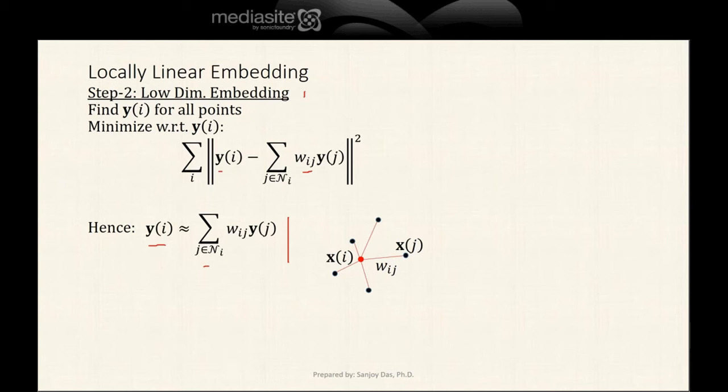Our goal is to minimize the following. For each sample i, we have this L2 norm squared, which is the error squared between Yi and summation Wij times Yj. We have to minimize this, and we have to simultaneously minimize it over all samples i.